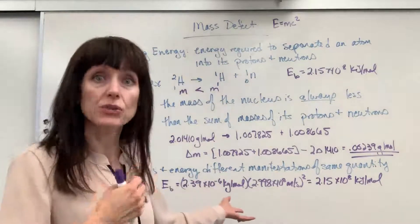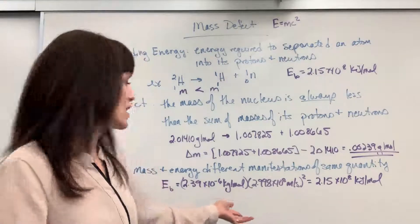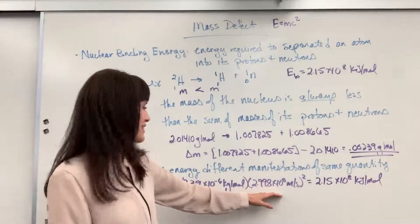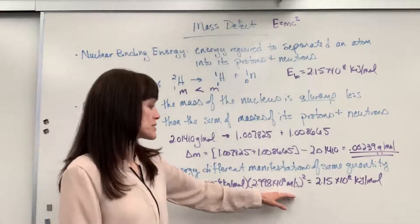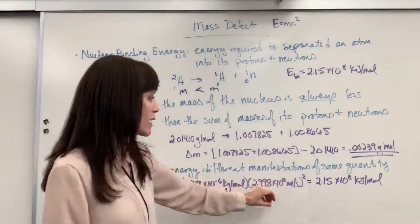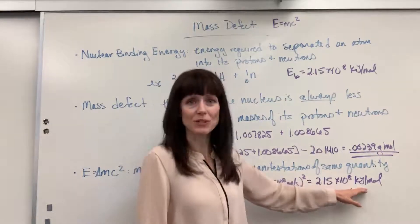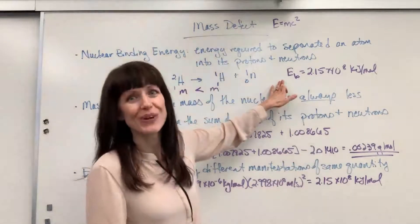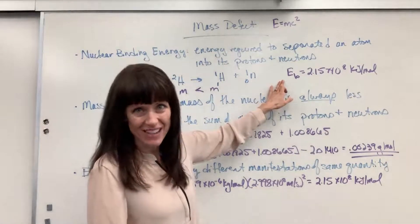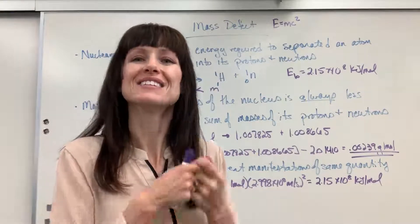And I did that because I want to get it to energy. Remember, a joule energy is kilogram times meter squared divided by second squared. So we had to have this in kilograms times speed of light, 2.998 times 10 to the 8 meters per second squared. So you multiply the change in mass times speed of light squared, and you get 2.15 times 10 to the 8 kilojoules per mole. Oh, my goodness, 2.15 times 10 to the 8 kilojoules per mole.